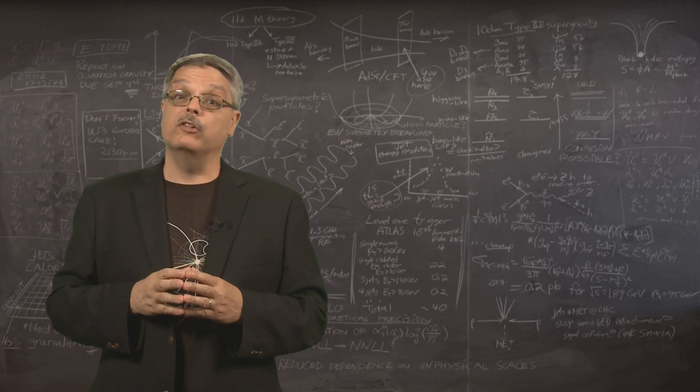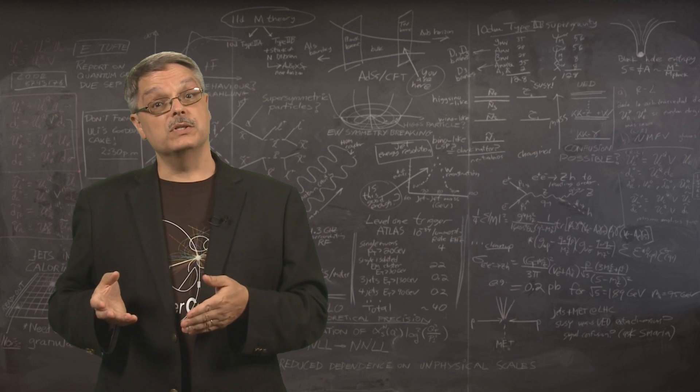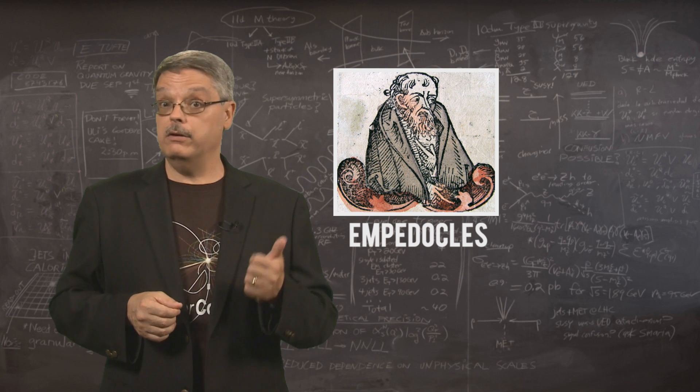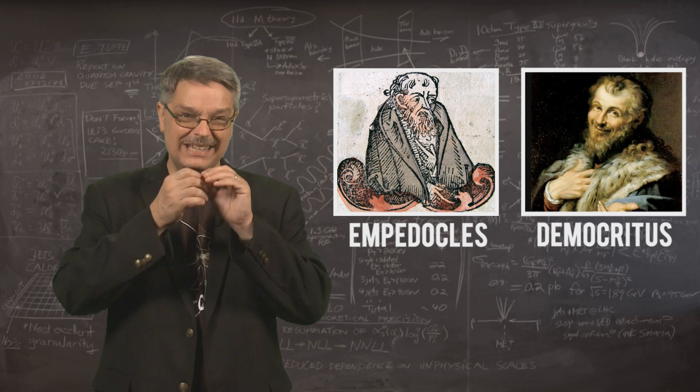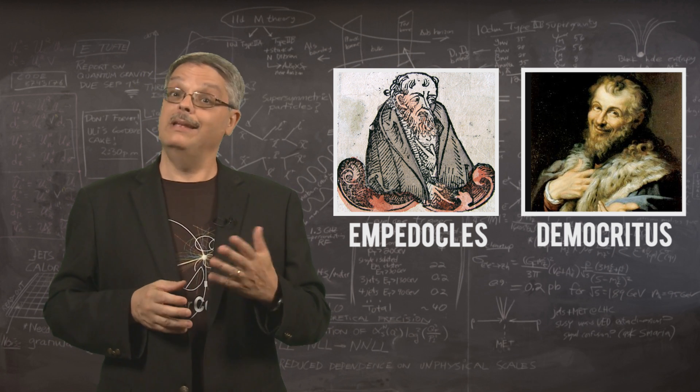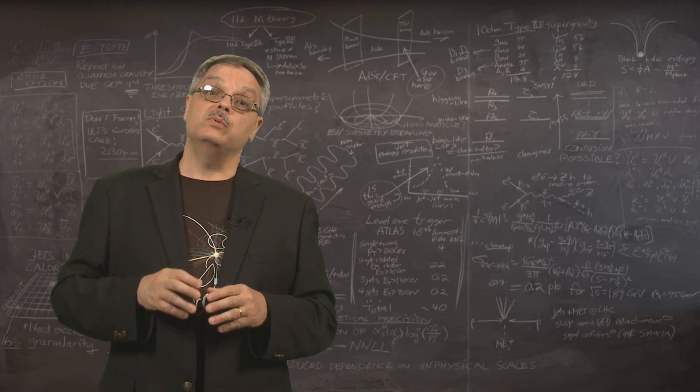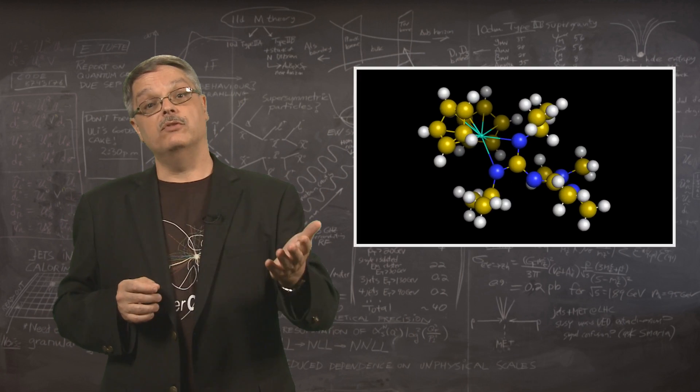The ancient Greek philosophers were among the first to think seriously about the question of the building blocks of the universe, with Empedocles offering the four elements of air, fire, water, and earth, and Democritus suggesting tiny, indivisible objects called atomos, from which our word atom originates. In the last couple of centuries we have made great strides in our understanding of just what is the smallest object in the universe.